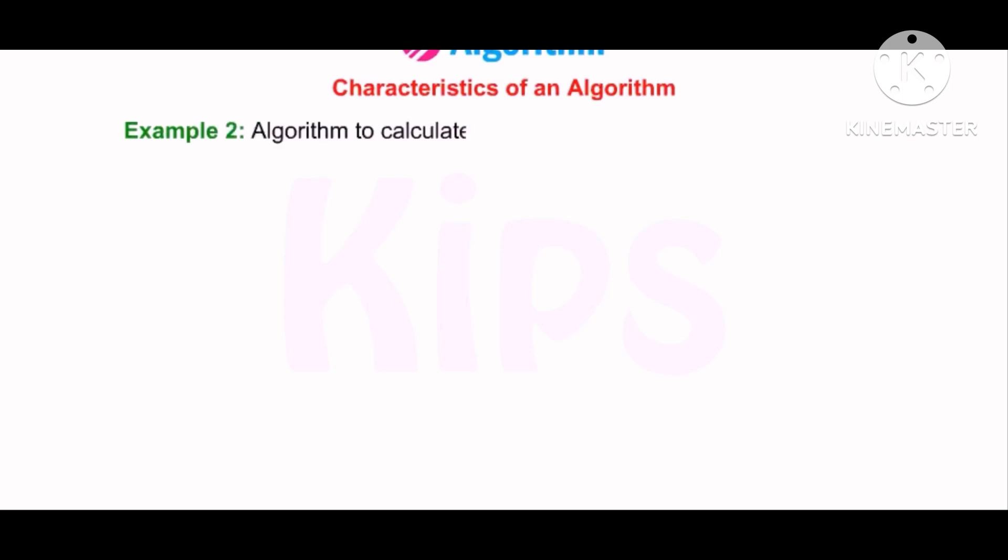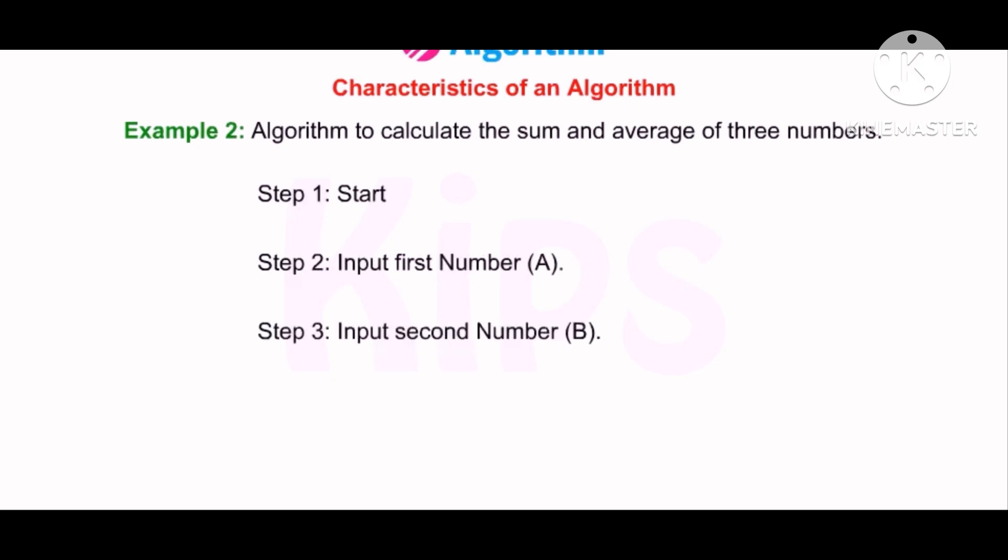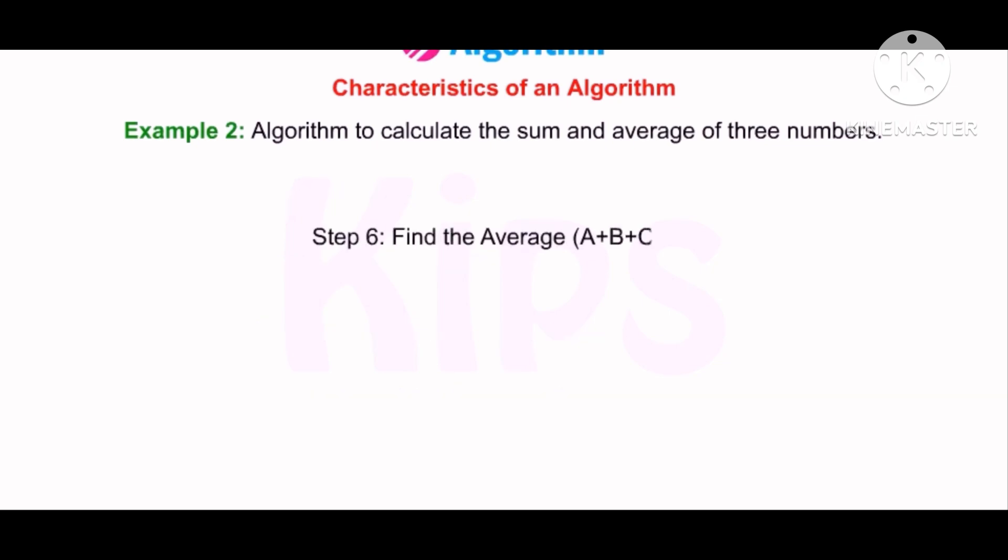Example 2: Algorithm to calculate the sum and average of three numbers. Step 1. Start. Step 2. Input first number A. Step 3. Input second number B. Step 4. Input third number C. Step 5. Find the sum of three numbers A plus B plus C. Step 6. Find the average A plus B plus C divided by three. Step 7. Print average. Step 8. Stop.